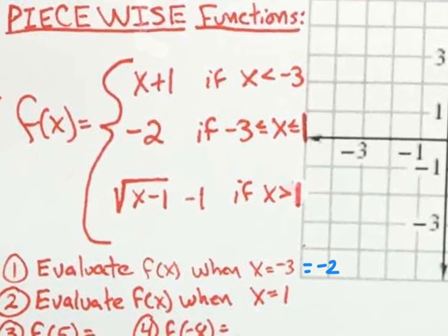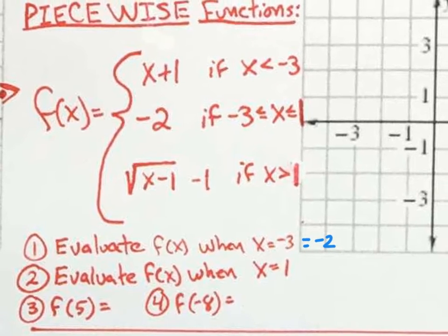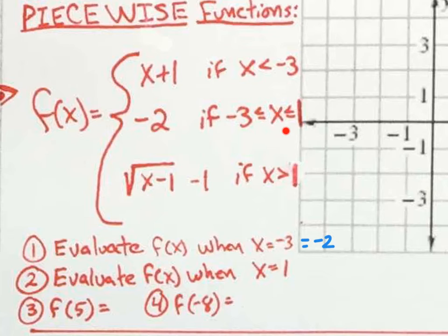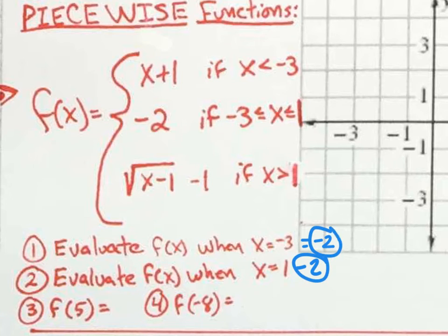For number two, evaluate f of x when x equals one. You want to think about where x equals one fits. Is one less than negative three? No. Is one greater than one? No. One is equal to one, so it satisfies the middle piece — and again, the answer is negative two.